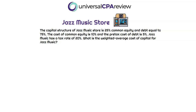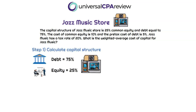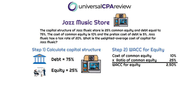We'll trust that the question gives us the necessary information and start working through our four-step mental map. Step one: Jazz has a capital structure that is 25% common equity and 75% debt. Our quick check — does that add to 100%? Yes. Step two: the cost of common equity, which the question tells us is 10%, multiplied by the equity ratio of 25%, gives us a WAC for equity of 2.5%.